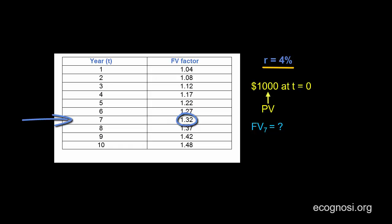So given an interest rate of 4%, $1000 will grow to 1000 times 1.32 which equals $1320.